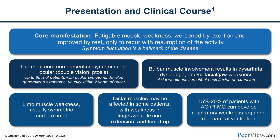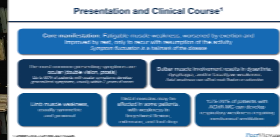Bulbar weakness involvement results in dysarthria, dysphagia, weakness and fatigue of the jaw with chewing and speech. Axial weakness may affect the neck — more often neck flexion than extension, but neither is spared. Limb weakness is typically symmetrical and more proximal, but distal muscles are also involved, including weakness of finger flexion and extension, and foot drop.